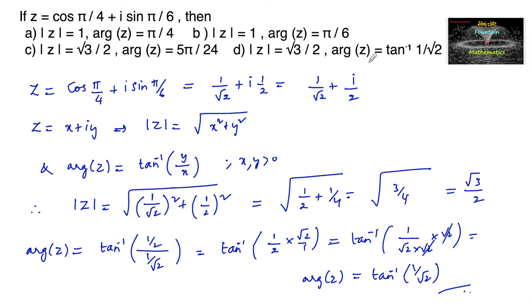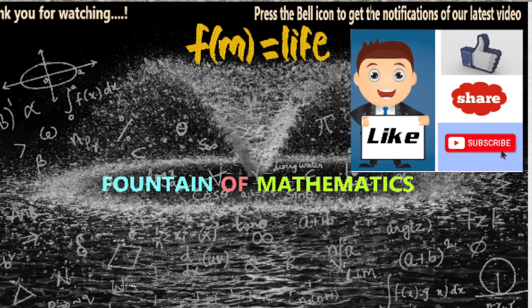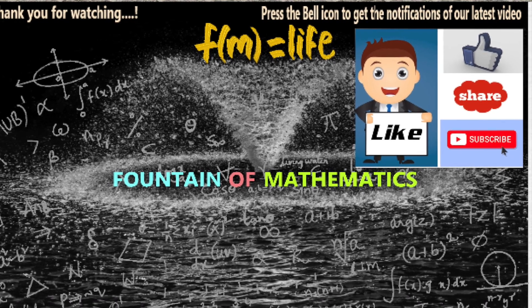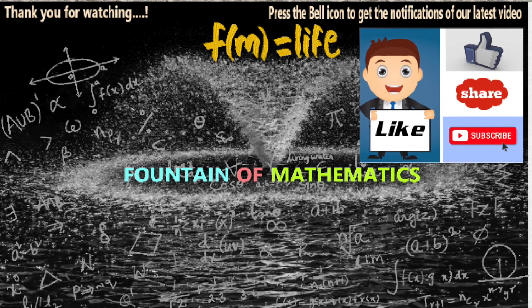So mod z = √3/2 and argument of z = tan⁻¹(1/√2), which is our fourth option — option D is the answer. Please like, share, subscribe and support us. Thank you.